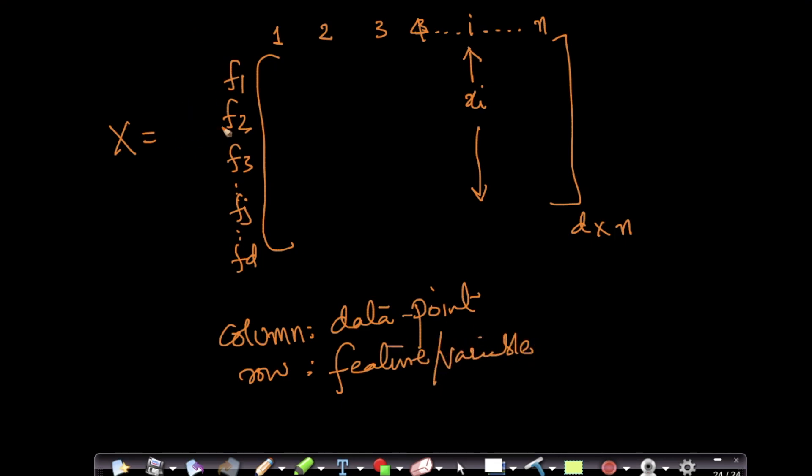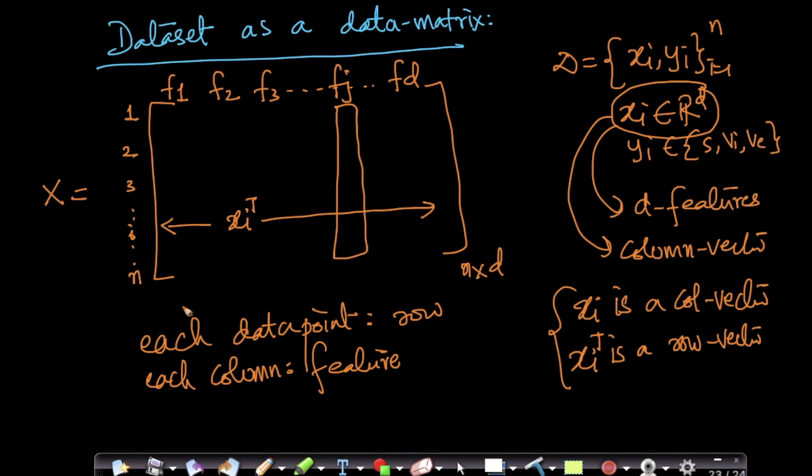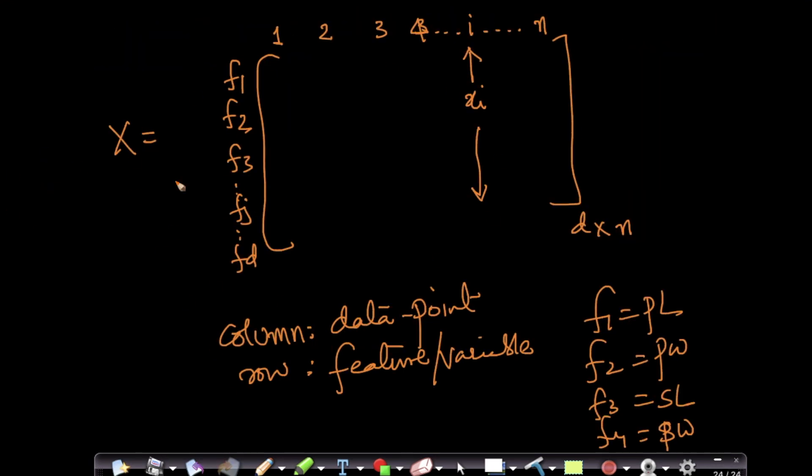So in this case, your f1 could have been petal length, your f2 could have been petal width, your f3 could have been sepal length, your f4 could have been sepal width. So there are two representations and remember this X that I have written is nothing but transpose of this. If I just swap rows with columns, columns with rows, you will get this matrix.